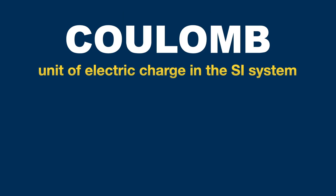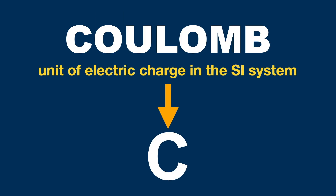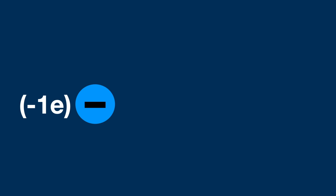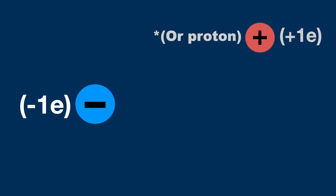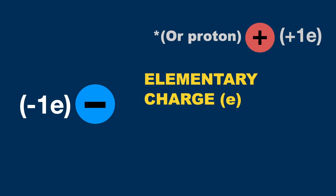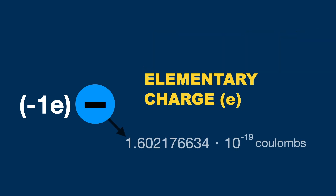Coulomb is a unit of electric charge in the SI system, and its symbol is a capital C. The electric charge carried by an electron is defined as the elementary charge, which is about 1.602176634 times 10 to the power of minus 19.